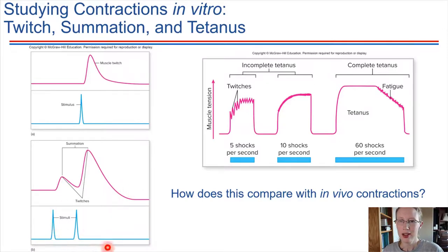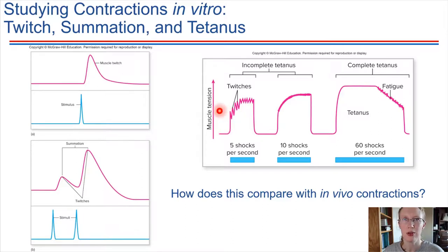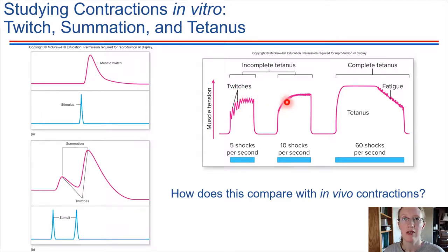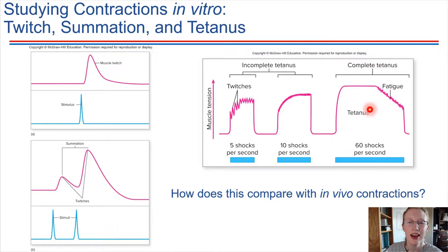If we move the electrical shocks closer and closer together — increasing the frequency — the twitches move closer and closer together as well. At some point, the muscle will just stay contracted in a sustained contraction because it doesn't have a chance to relax between shocks. That situation is called tetanus — complete tetanus — which would eventually be followed by fatigue, as the muscle eventually stops contracting. Don't confuse this with the disease tetanus; it's the same word applied in two different contexts.